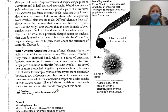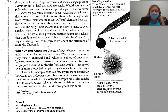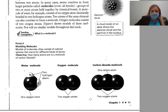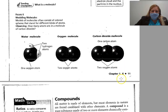When atoms combine — atoms of most elements have the ability to combine with other atoms. When atoms combine, they form a chemical bond, which is a force of attraction between two atoms. In many cases, atoms combine to form larger particles called molecules — groups of two or more atoms held together by chemical bonds. A molecule of water, for example, consists of an oxygen atom chemically bonded to two hydrogen atoms. Two atoms of the same element can also combine to form a molecule — oxygen gas consists of two oxygen atoms. You have water: one oxygen and two hydrogen atoms. You have oxygen gas: two oxygens. And you have carbon dioxide: one carbon and two oxygen atoms.